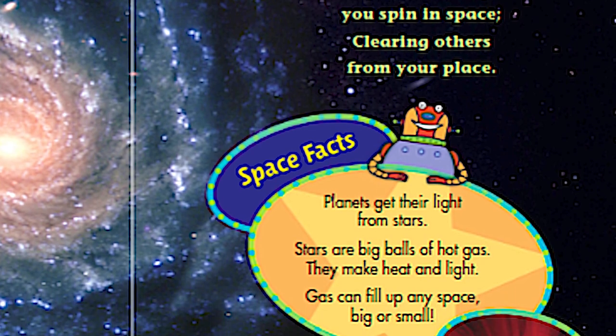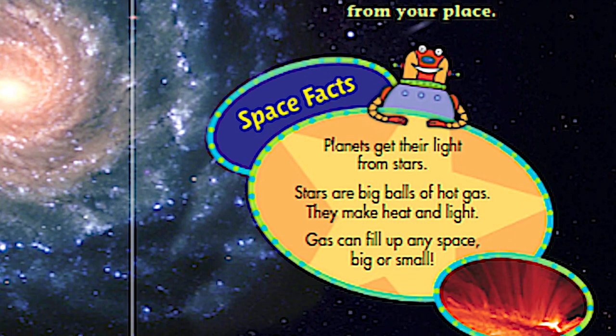Look here at the bottom of this page. There are space facts. It says, Planets get their light from stars. Stars are big balls of hot gas. They make heat and light. Gas can fill up any space, big or small.